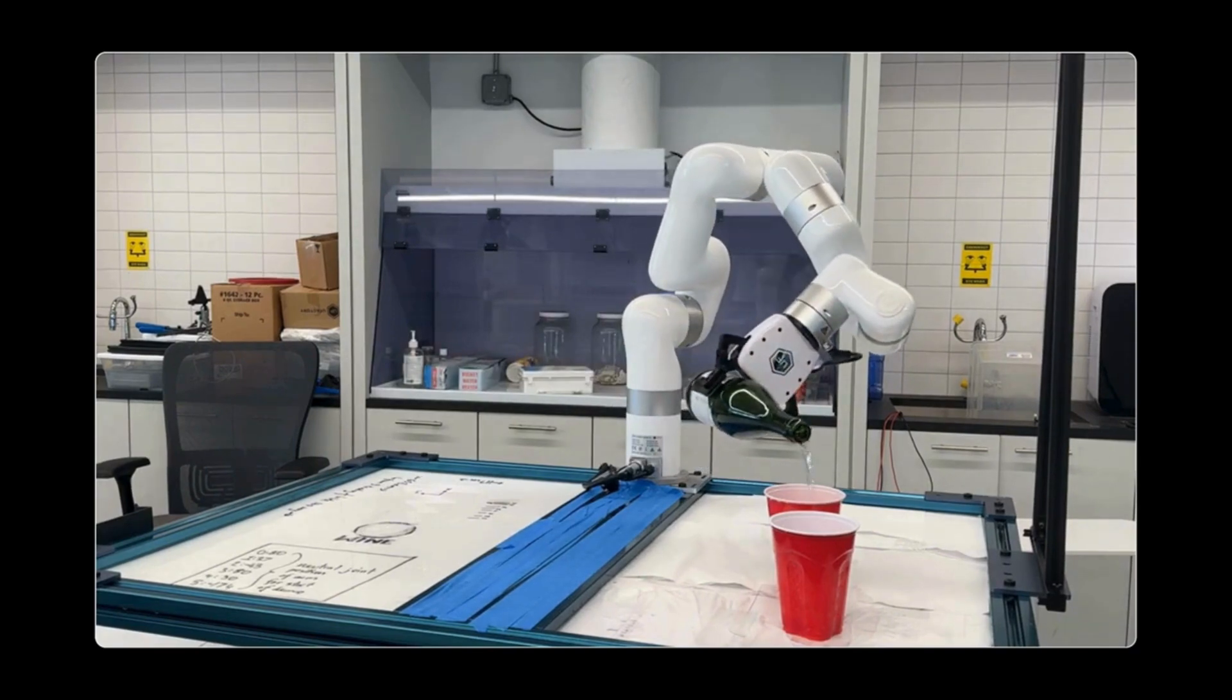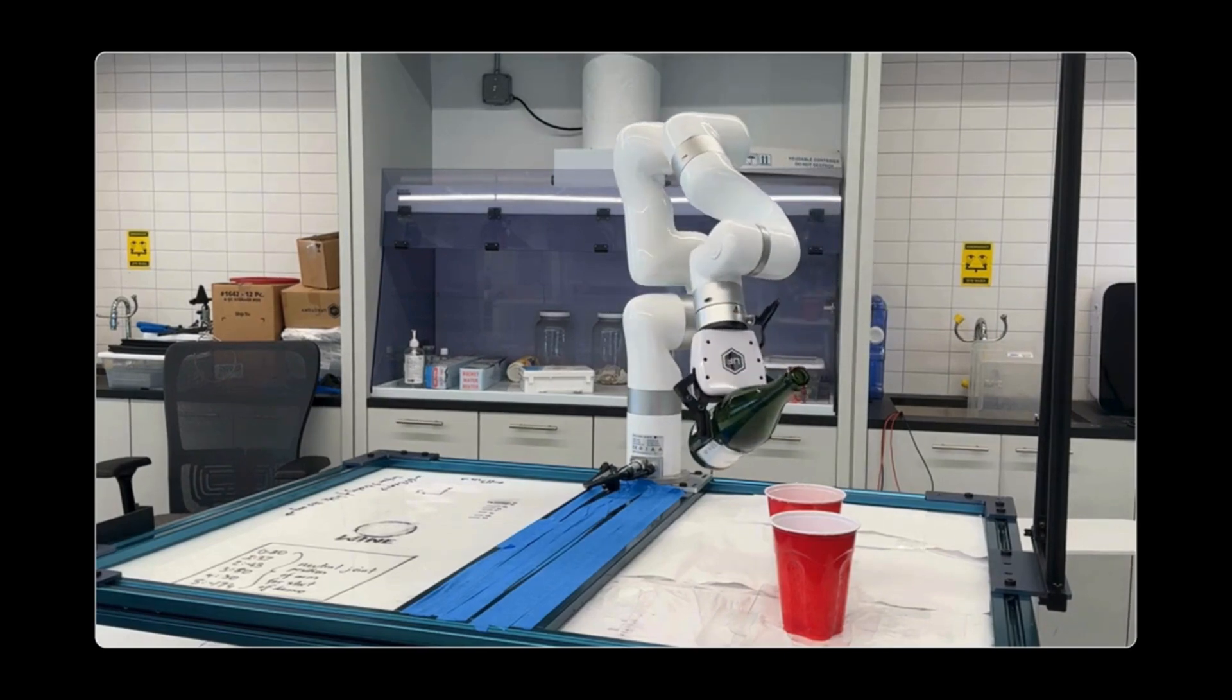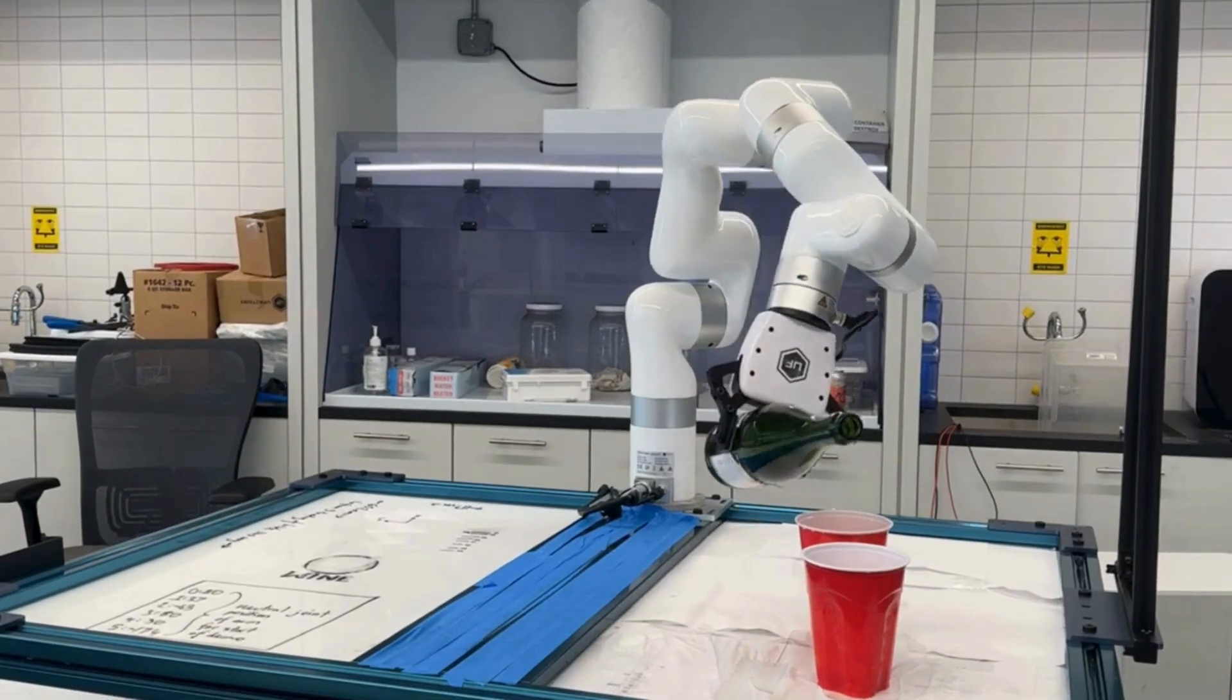The system plans a safe path keeping the bottle upright with user-defined constraints to prevent spills. A few lines of code power the whole process.